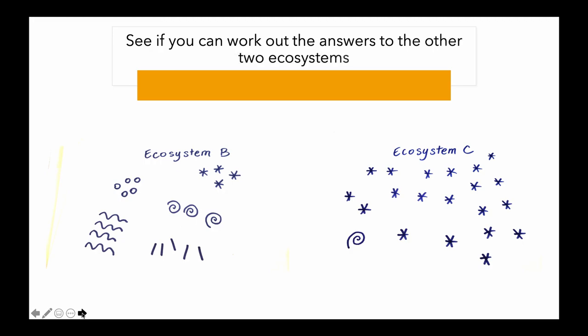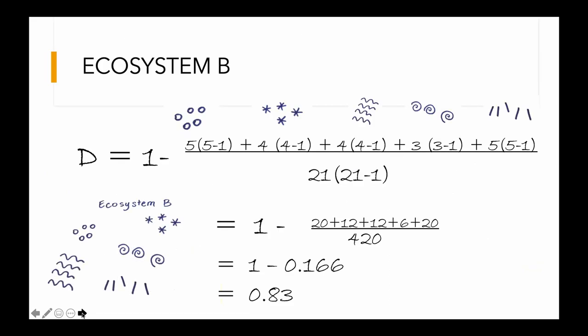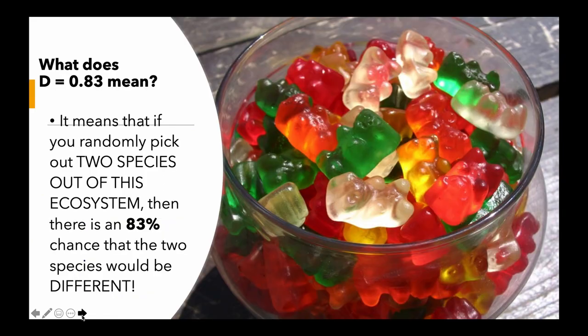Now see if you can work out the answers for the other two ecosystems. For Ecosystem B, the answer is 0.83. This means if you randomly pick two species out of this ecosystem — if we can imagine an ecosystem as a jar of gummy bears — there's an 83% chance that the two species would be different.